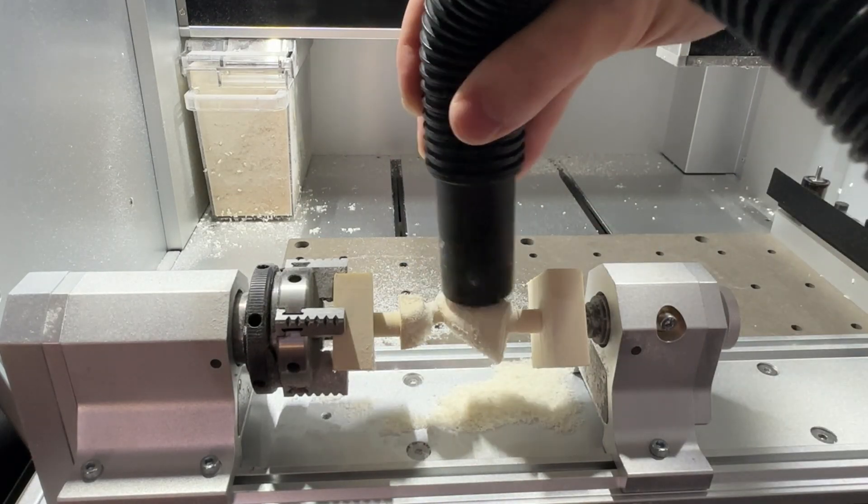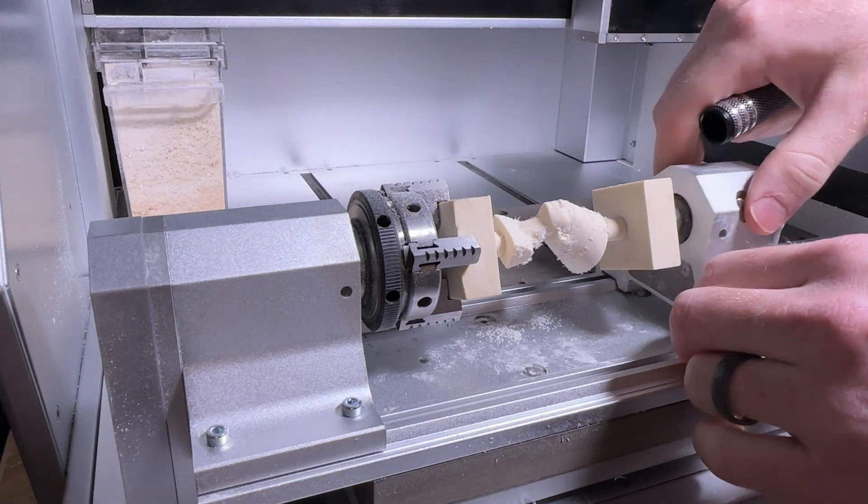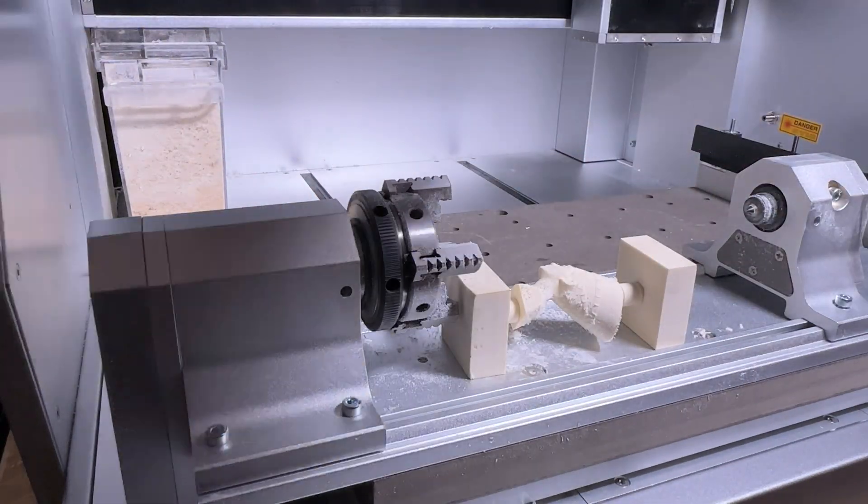Once manufacturing is complete, you can clean off the part by using a brush or a vacuum and always turn off the Carvera before loosening the chuck and set screws to release your parts from the rotary module.